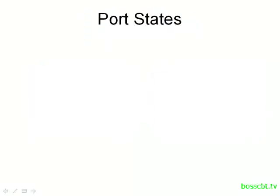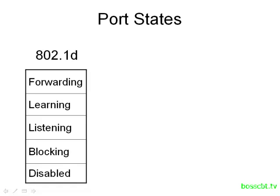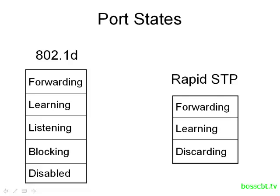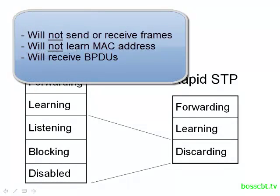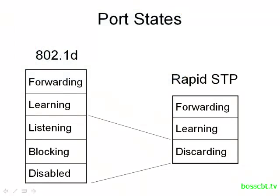Let's take a look at the different port states of Spanning Tree — in other words, how a port behaves. In Standard Spanning Tree, we had five: forwarding, learning, listening, blocking, and disabled. In Rapid Spanning Tree, we only have three. We keep the forwarding and the learning states. However, the listening, blocking, and disabled states all get merged into a single state, which is now called the discarding state. A port in the discarding state will not send or receive any frames, and it will not learn any MAC addresses. However, it can receive BPDUs, so it's similar in behavior to the blocking state of Standard Spanning Tree.